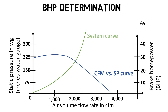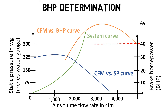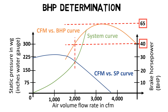Step four: to determine the required blower HP, draw a vertical line up from the point where the system curve intersects the CFM versus SP curve to where it crosses the CFM versus BHP curve. In our example, the required HP is 40. The blower capacity should include about 50% safety margin; therefore, we should select a blower with a higher HP of 65.